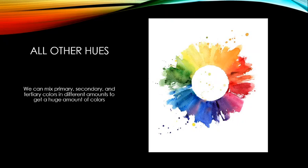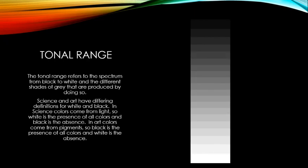Beyond primary, secondary, and tertiary colors, we can mix hues at all different varying levels to get a huge amount of colors. By changing the amounts we blend, we can get all these wonderful hues — for example, just a little red with blue gives a cooler red leaning toward purple.